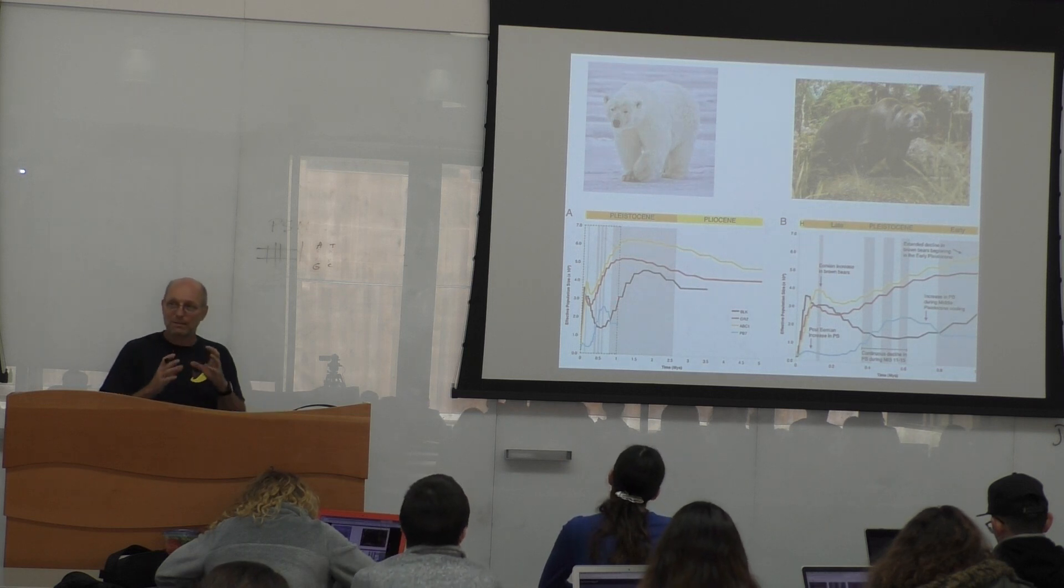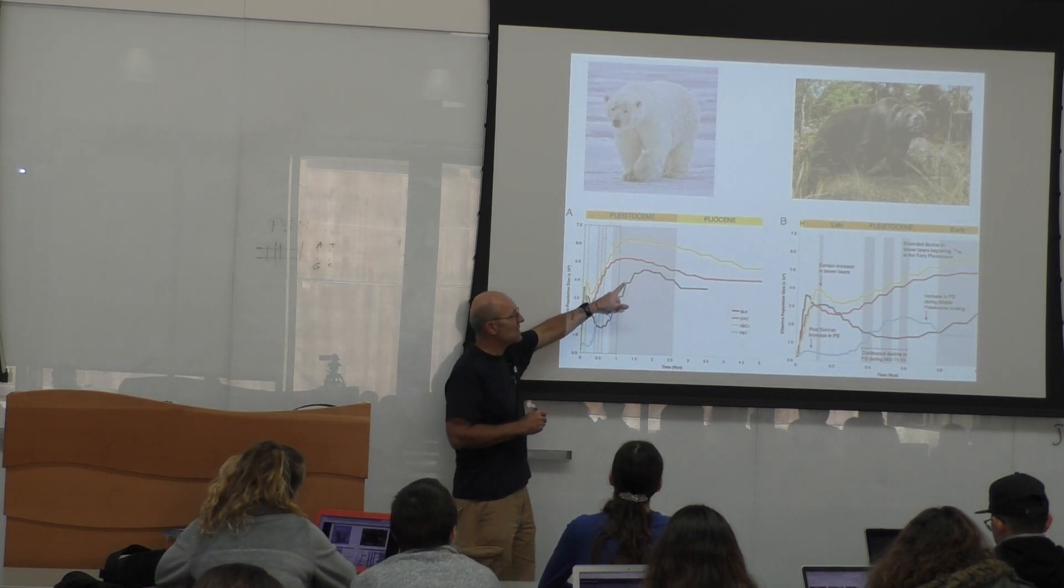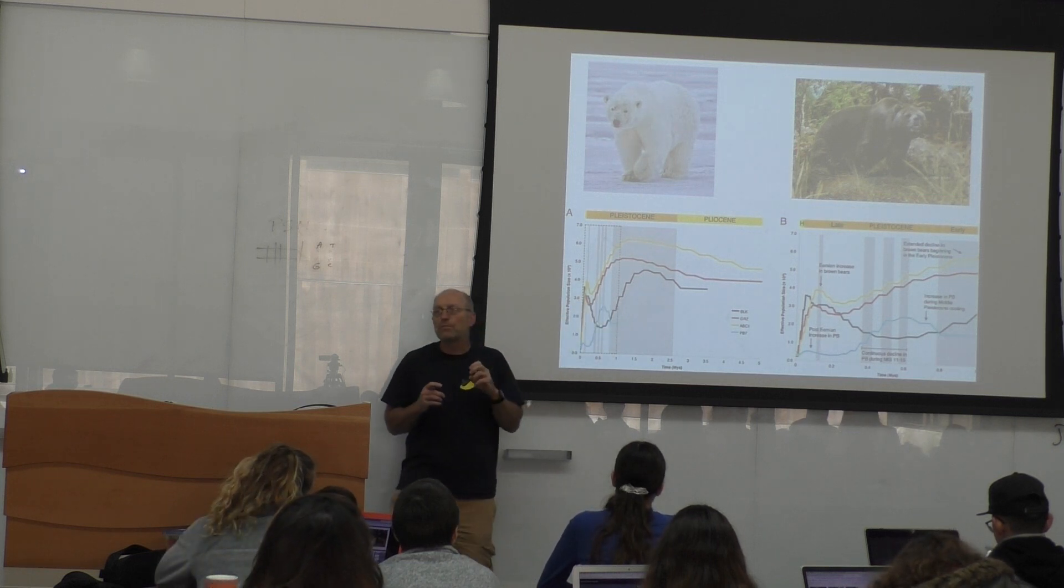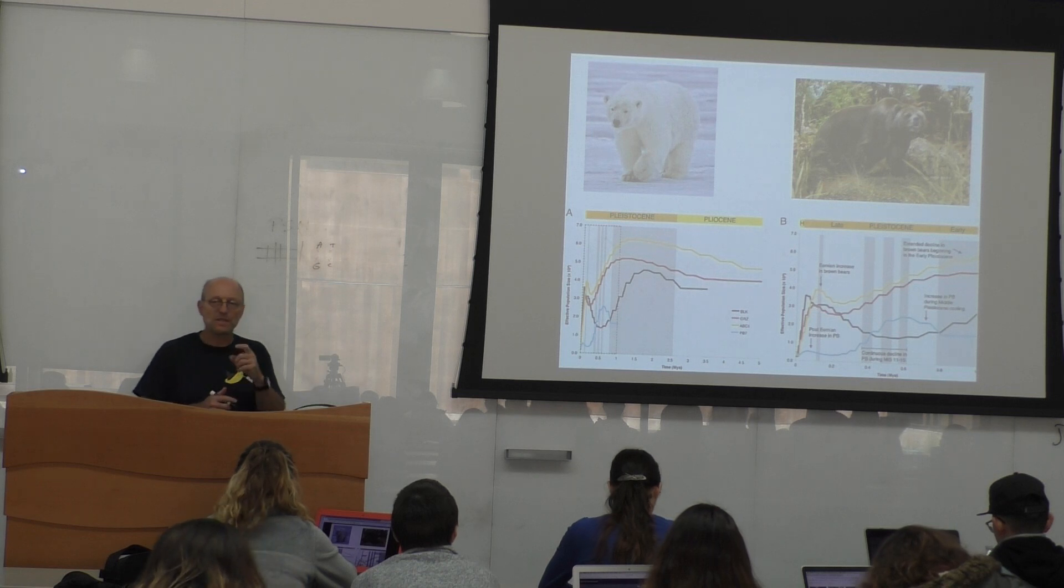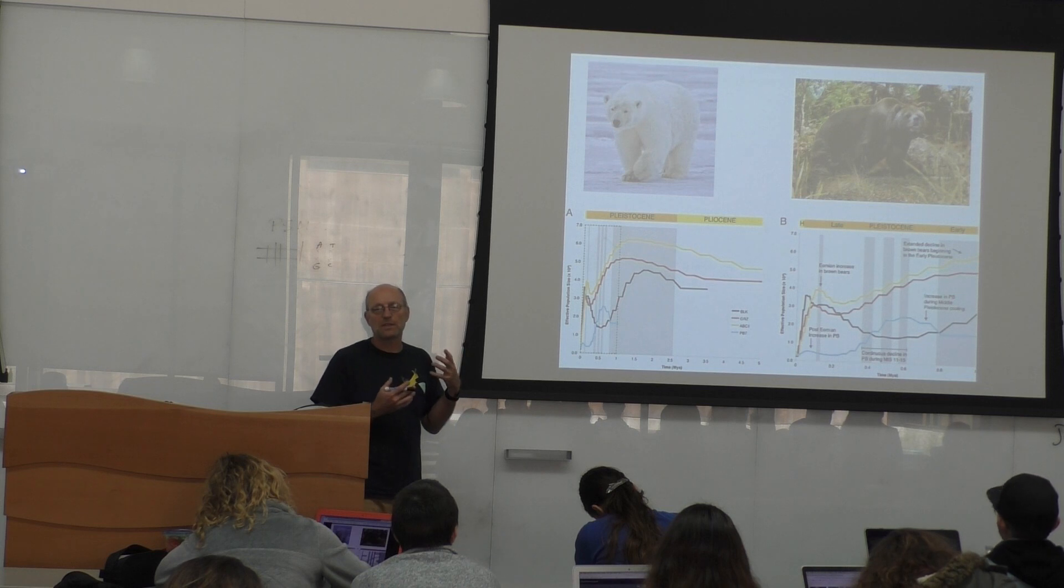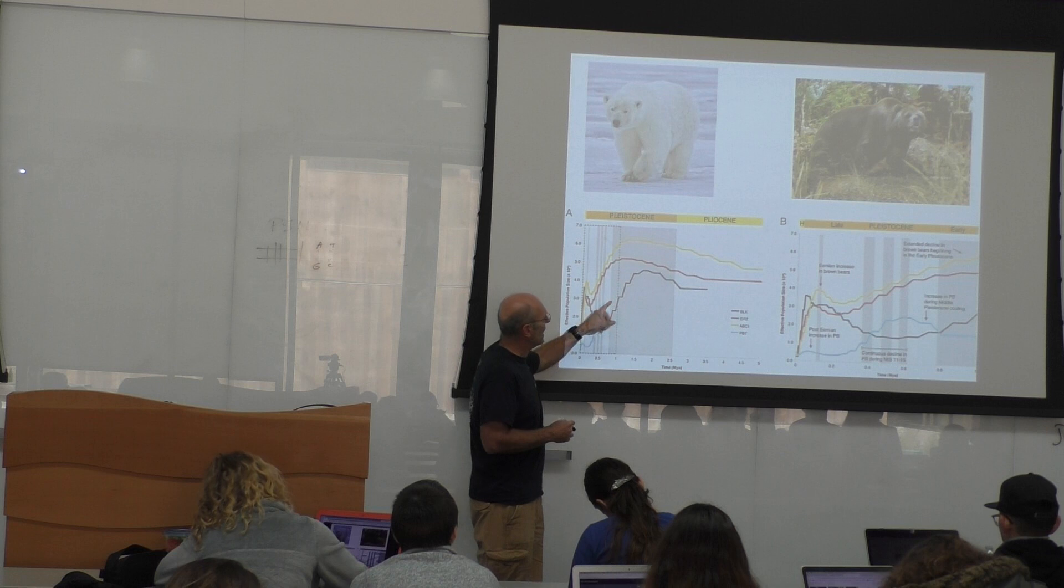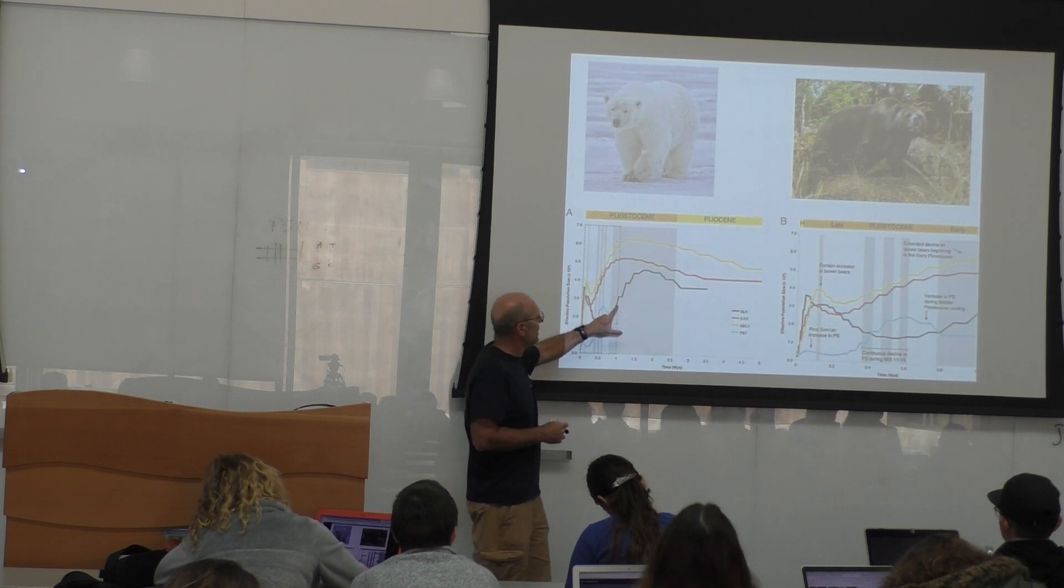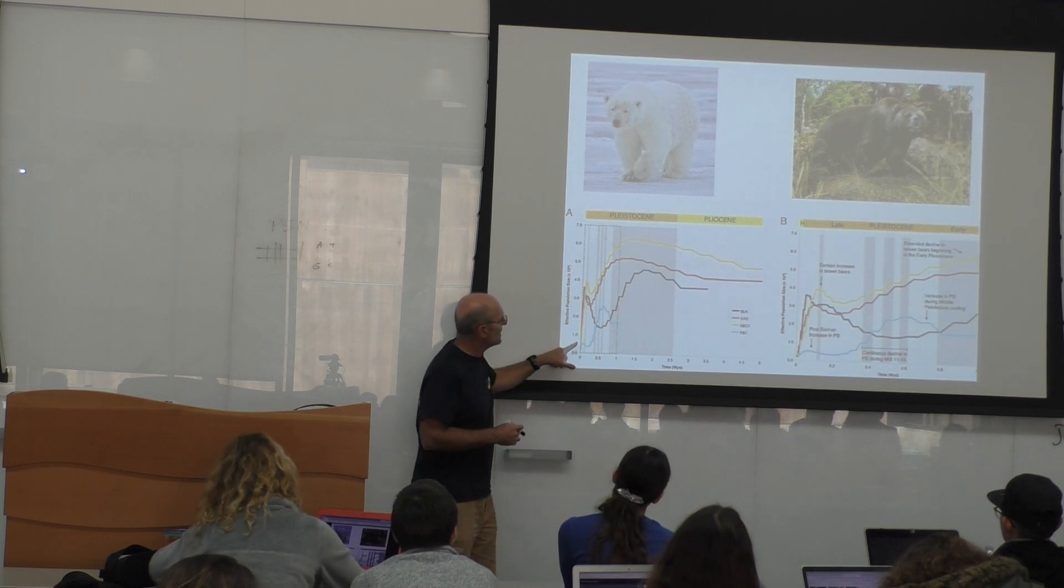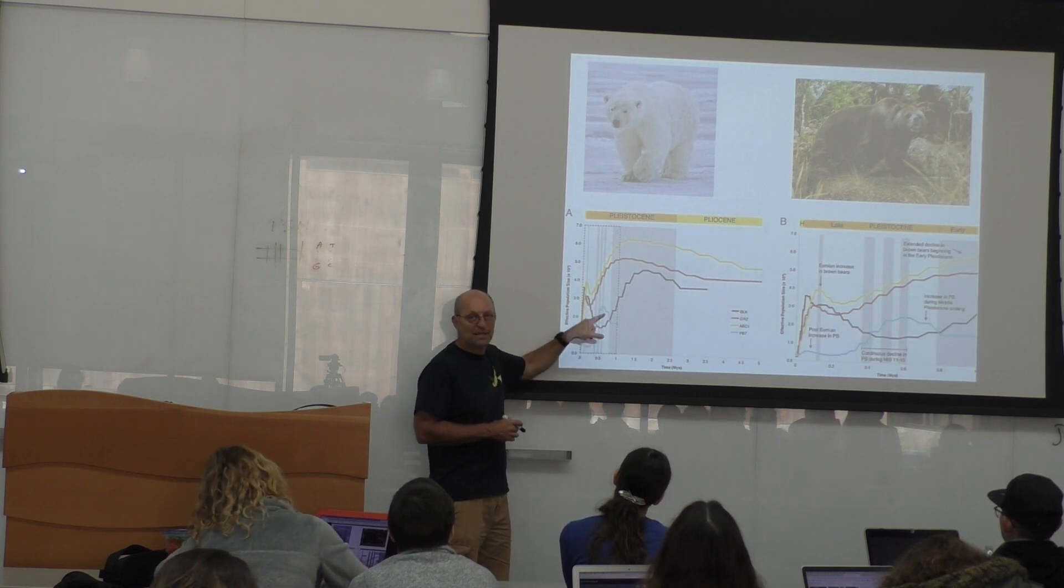And so, by doing, by playing around with those three parameters, you actually, each one of these lines is a single individual. You actually can reconstruct the population size of the organism. And so you sequence a single genome, and you can make what is called a skyline plot, which was a system that was discovered by Beth Shapiro. And you can reconstruct, actually this one is for each one of the species, I'm sorry. You can reconstruct the population size of each species.